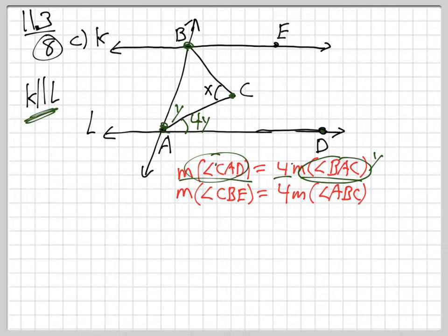They say the measure of angle CBE, what is that? CBE here, is four times the measure of ABC. ABC, this one, that's ABC. So hold on, before I put in another letter, we can actually figure out what this has to be right here.